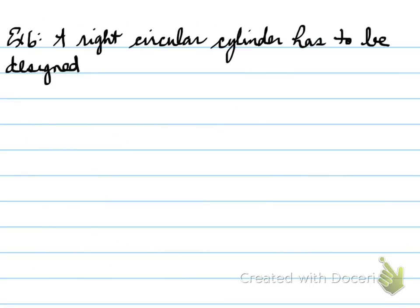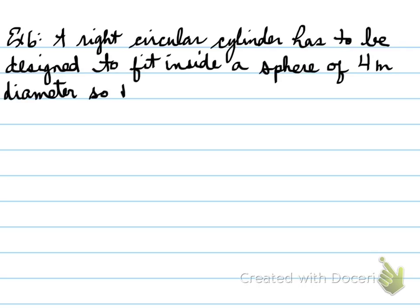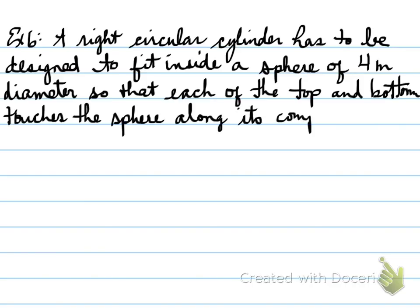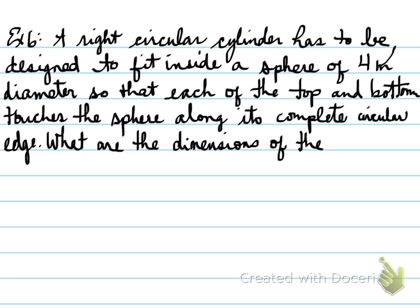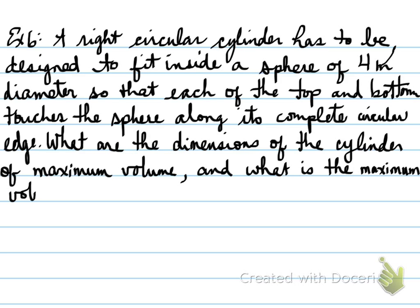All right, next question. Example number six. A right circular cylinder has to be designed to fit inside a sphere of 4 meter diameter so that each of the top and bottom touches the sphere along its complete circular edge. What are the dimensions of the cylinder of maximum volume, and what is the maximum volume? So, we have a sphere, as you can see here. So there's our sphere, looking at it like a cut crosswise when we're looking at it. And inside there is going to be a right circular cylinder. So if we were to cut a right circular cylinder crosswise, it would potentially just look like a rectangle. And there's a circle at the top and a circle on the bottom, but we know that the edges touch the sphere.